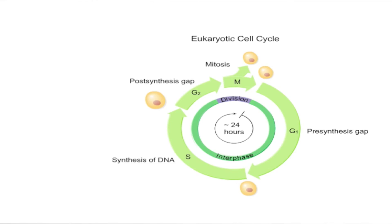Cells that are growing and dividing go through a repeating series of events called the cell division cycle or cell cycle.